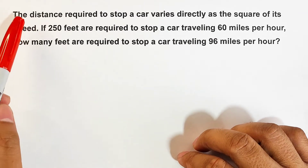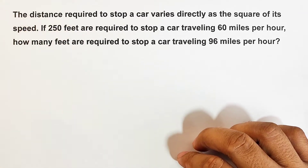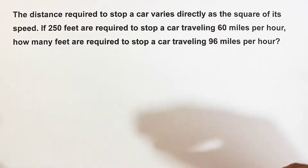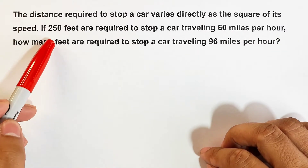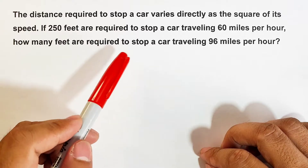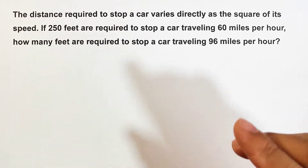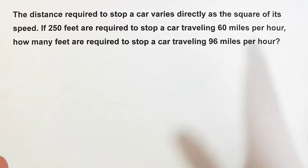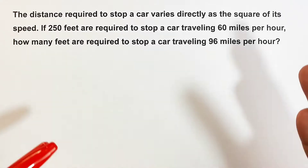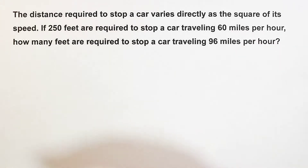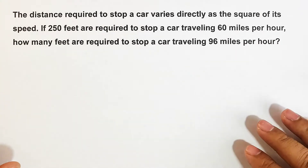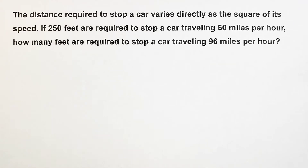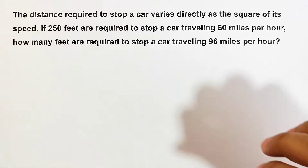Let's start this problem under direct variation. The distance required to stop a car varies directly as the square of its speed. If 250 feet are required to stop a car traveling 60 miles per hour, how many feet are required to stop a car traveling 96 miles per hour? This is definitely under direct variation because it says 'varies directly.'